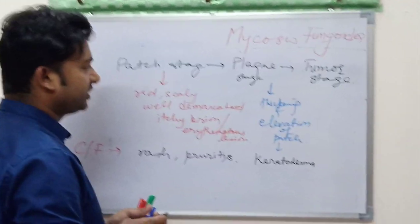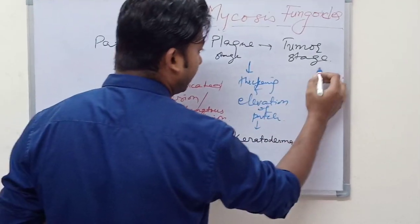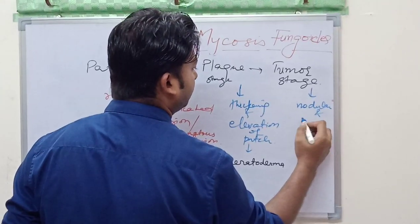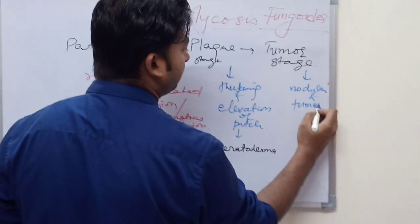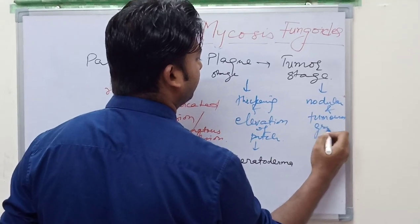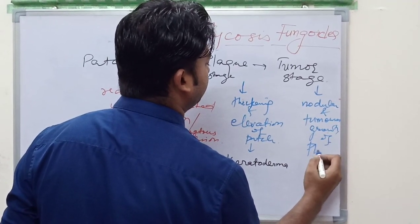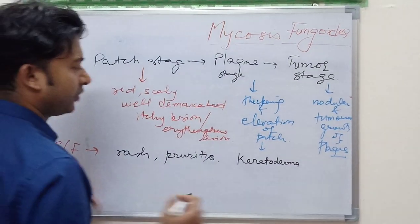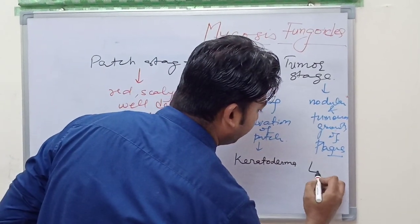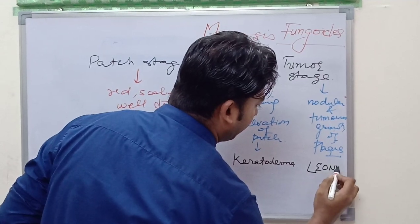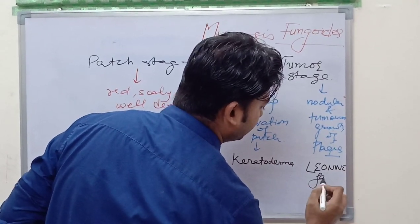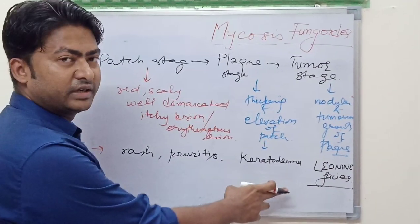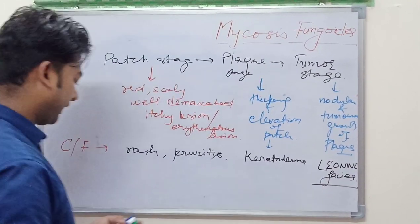In tumor stage, the disease progresses to advanced stage and there is nodular and tumorous growth of plaque. So the clinical feature, if face is involved, we get typical leonine facies. You can check the image from the net.